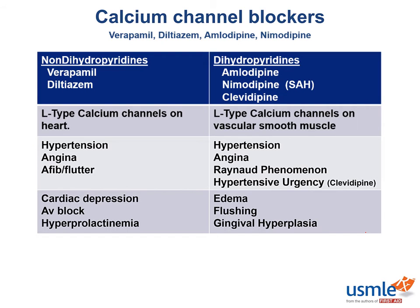Flushing occurs because you increase the diameter of the skin vessels, increasing the flow of red blood in the skin, making the person look very red like a cherry. The dizziness is a combination of a drop in cardiac output and total peripheral resistance, causing hypoperfusion to the brain. Constipation is associated with calcium channel antagonism of the interstitial cells of Cajal, which set the baseline depolarizations of the intestinal smooth muscle and control gut peristalsis.